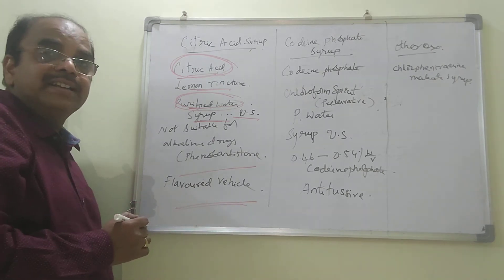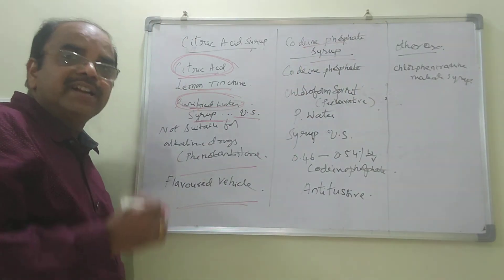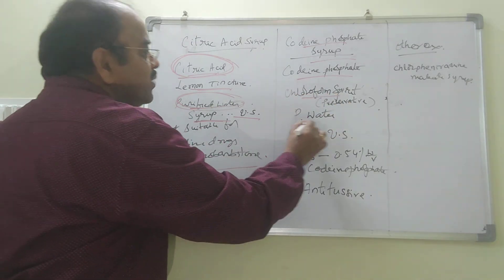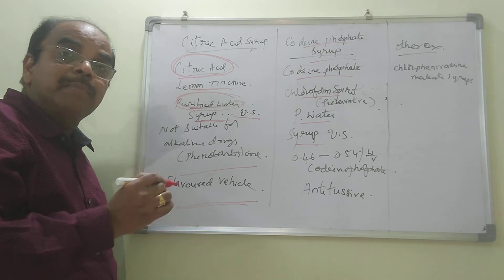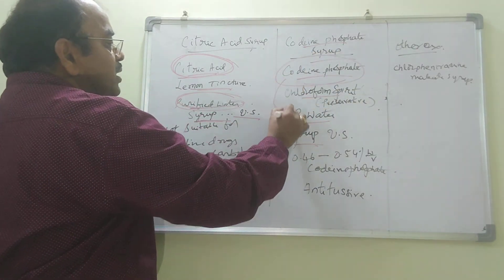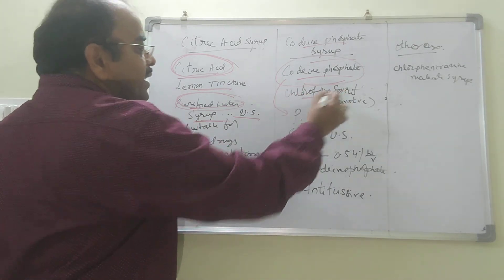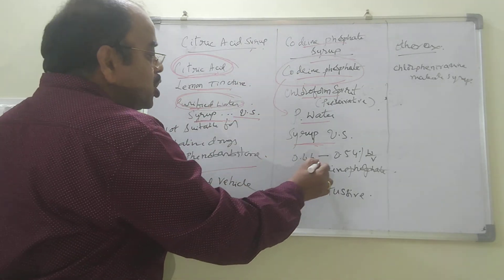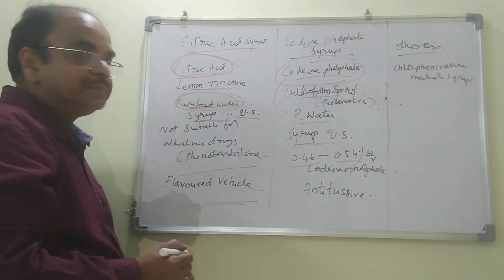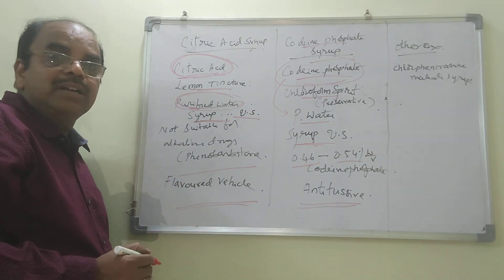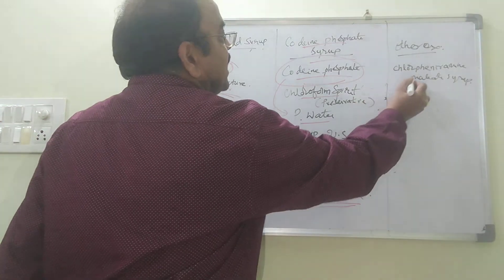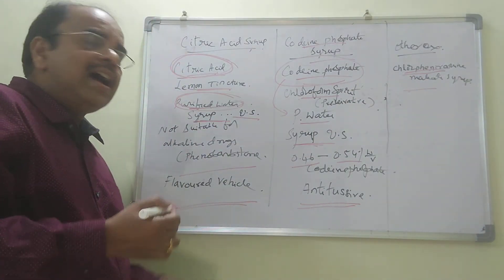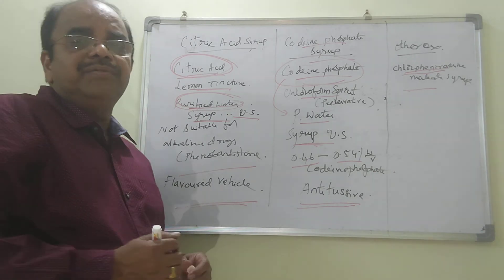Codeine phosphate syrup — antitussive, used in the treatment of cough. Ingredients: codeine phosphate, chloroform spirit, purified water, and syrup. Chloroform spirit serves as a preservative. Dissolve codeine phosphate in water, add chloroform spirit, make up the volume with syrup. The final strength of codeine phosphate in the syrup is 0.46 to 0.54% weight by volume. For chlorphenamine maleate syrup (antihistamine): dissolve chlorphenamine maleate in water, add syrup, and make up the volume.